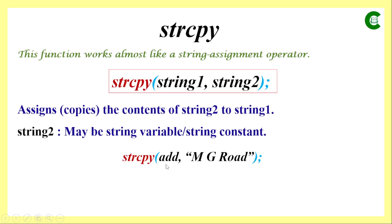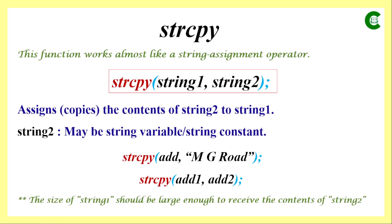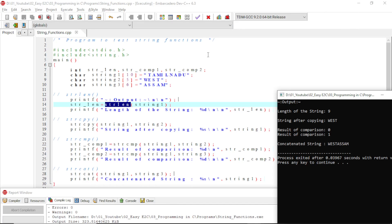Here is an example where the first argument is a string variable and the second argument is a string constant in double quotes. Another example uses both arguments as string variables — whatever value is stored in the second variable is copied to the first. The size of the first variable must be large enough to accommodate the content of the second; if the size of the first argument is less than the second, the excess characters will be truncated.